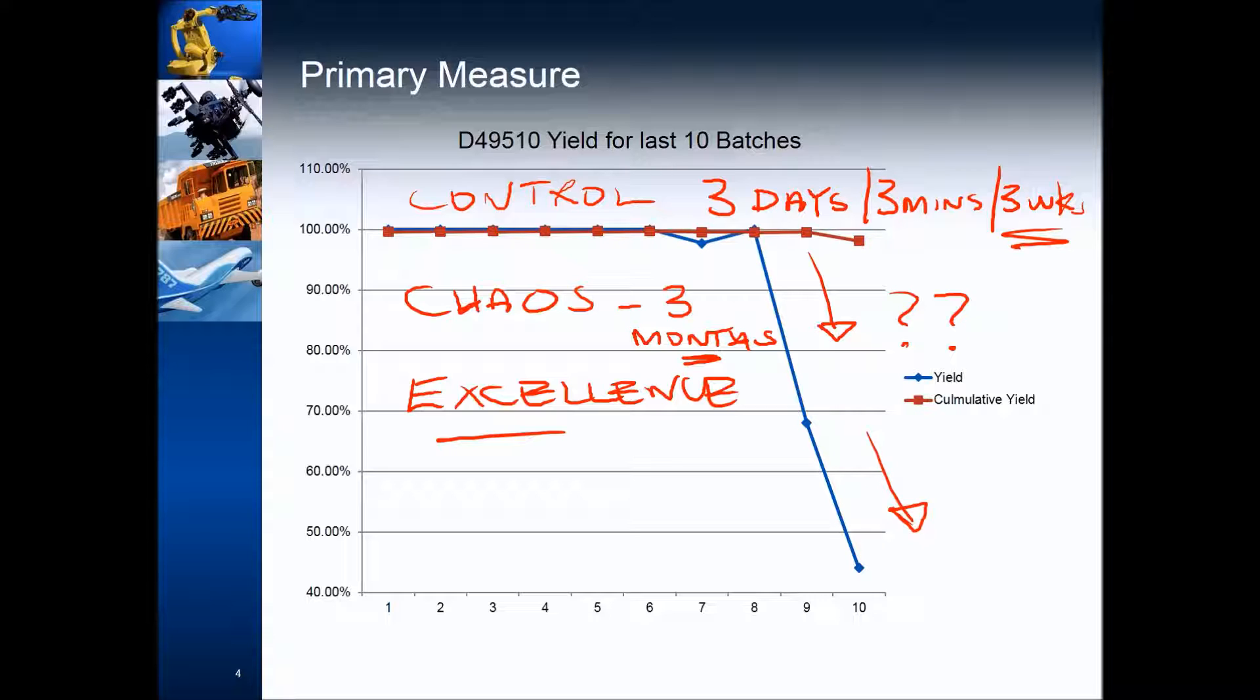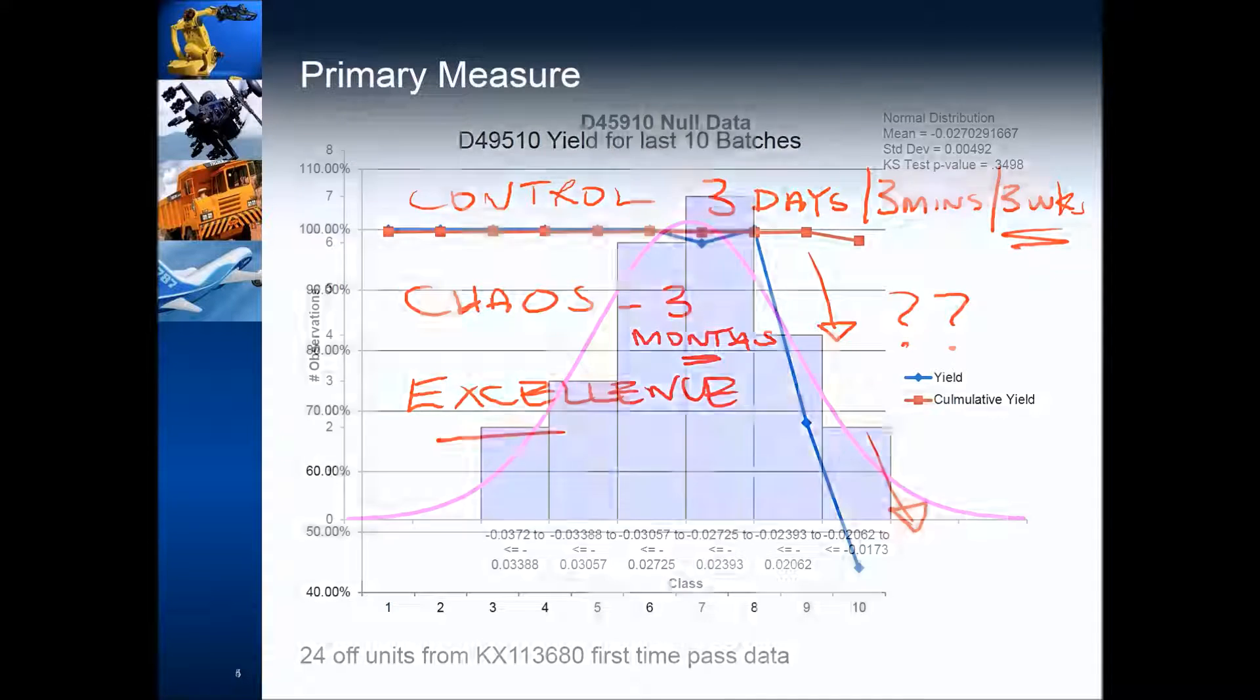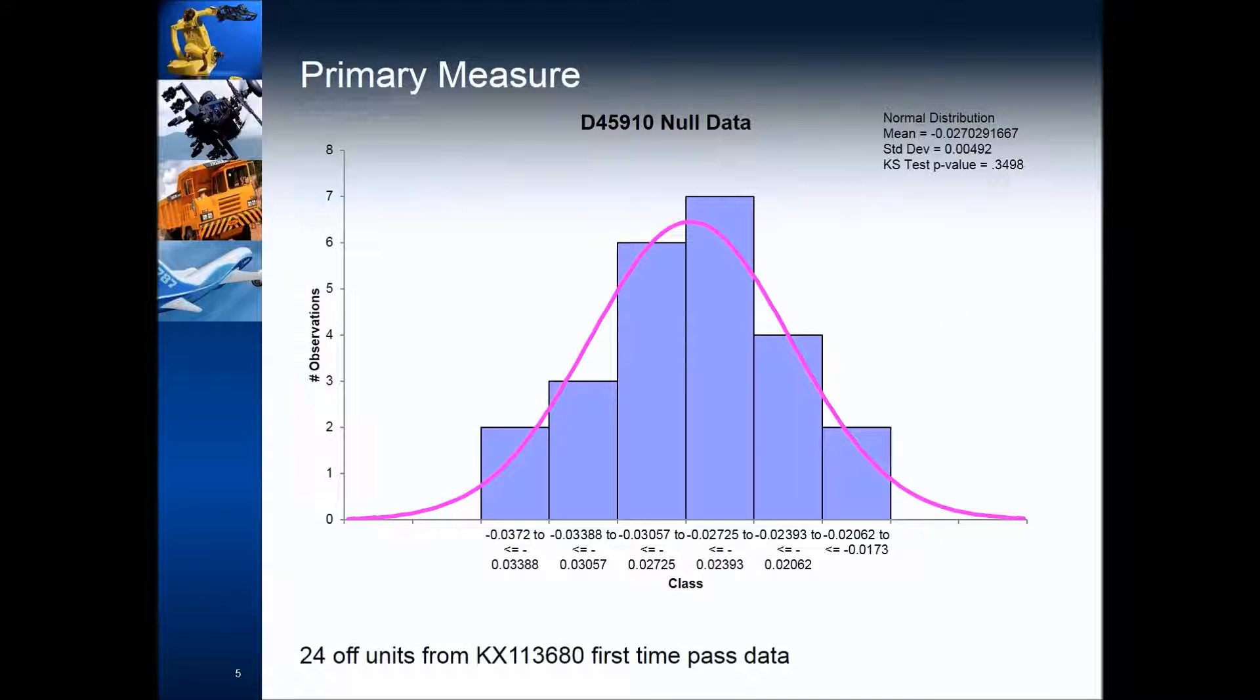Here is another great example. We are in control. Something's happened. What is it? Now this happens to be measurable data in terms of what we're doing. This null position is measurable. The jig that you saw earlier measures the null position. So we can take, in this case, 25 units, and we can look at the first-time pass data.